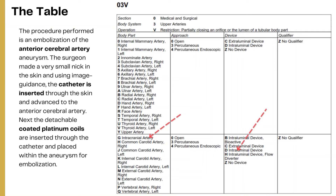For the fourth character (body part), the anterior cerebral artery does not have its own body part value in the table. Looking up the body part key, anterior cerebral artery maps to Intracranial Artery. The fifth character (approach) is Percutaneous, since a catheter is inserted through the skin. The sixth character is D for Intraluminal Device, because detachable coated platinum coils are inserted and left in place. The seventh character is Z for no qualifier.